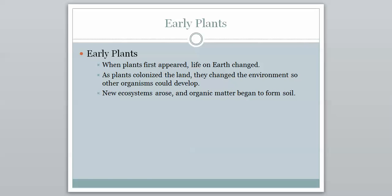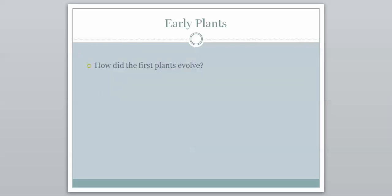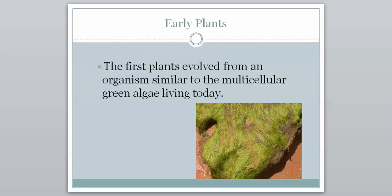Plants are key, and we owe a lot to them. So how did these plants evolve? How did they come to be? The first plants evolved from an organism similar to the multicellular green algae living today. I'm sure you've all seen green algae, maybe better known as pond scum, growing on top of the ponds in the summertime. It's confined solely to water, and our first plants evolved from an organism similar to that multicellular green algae.